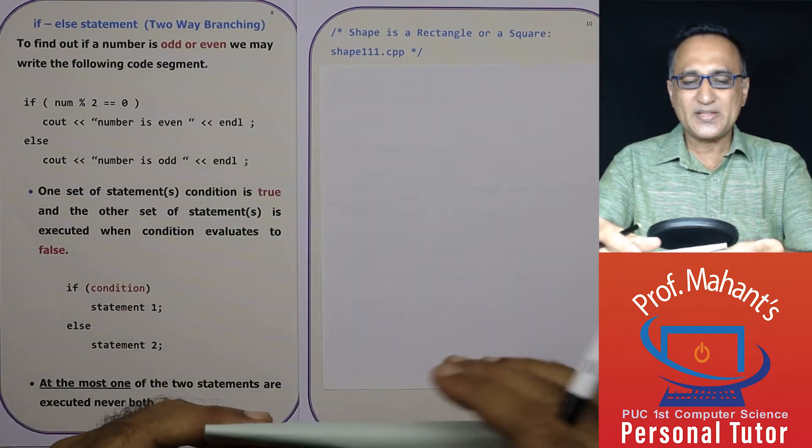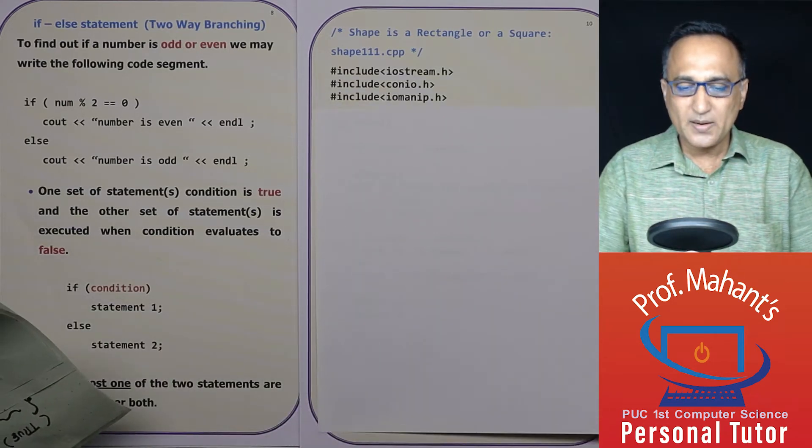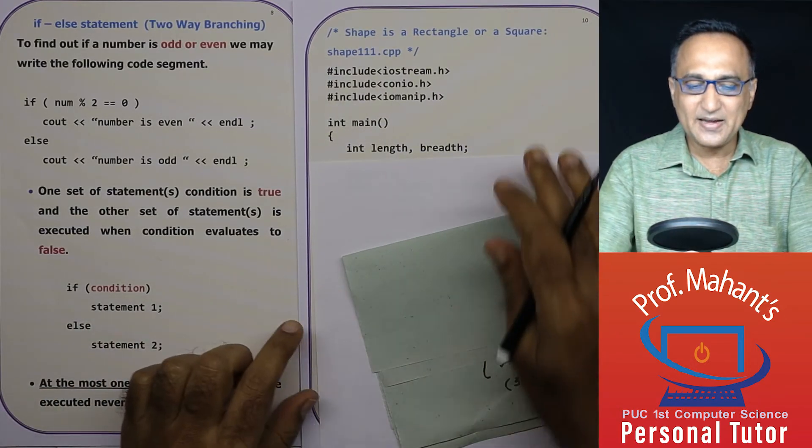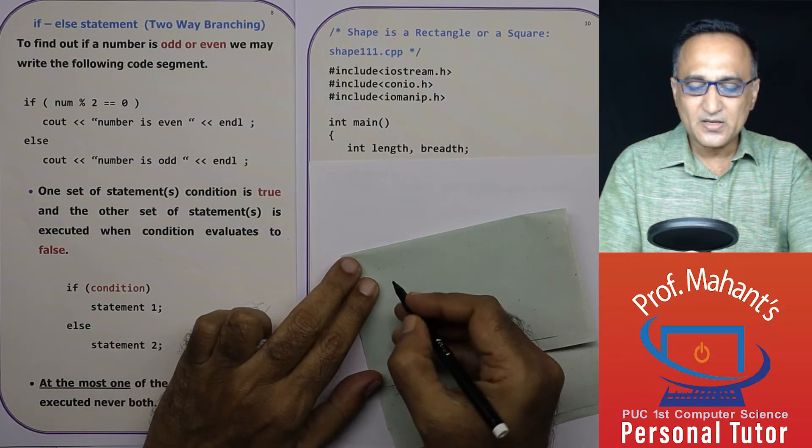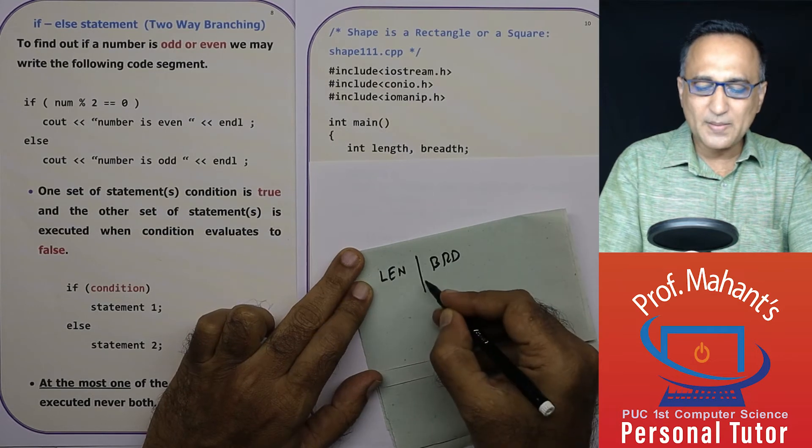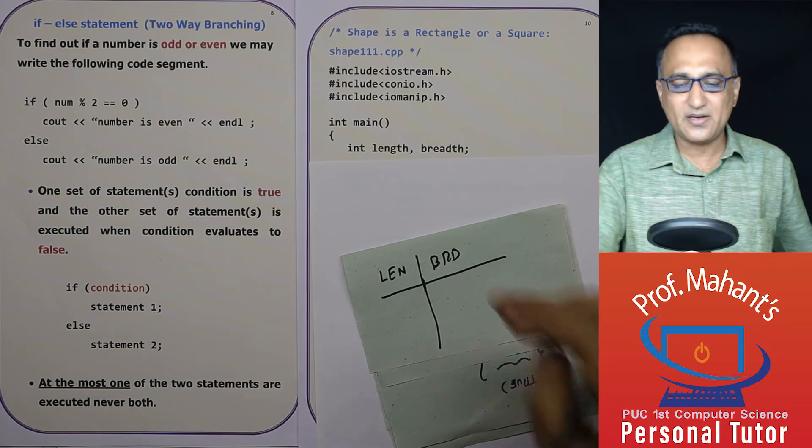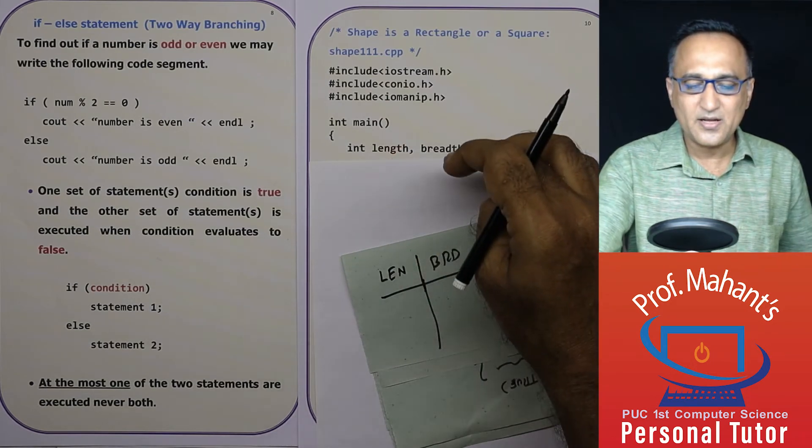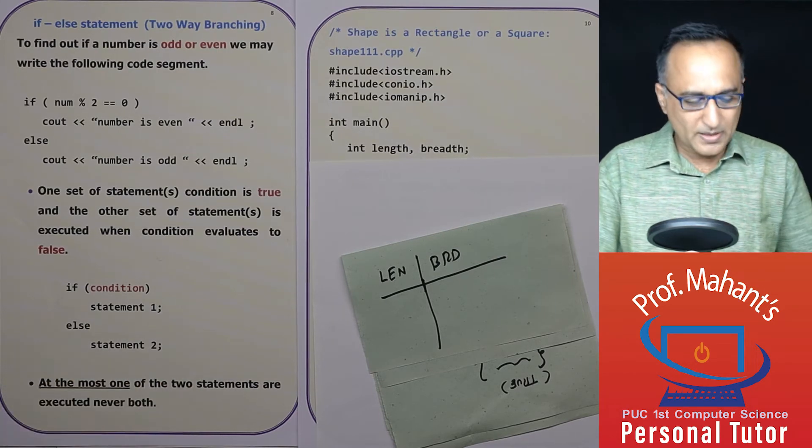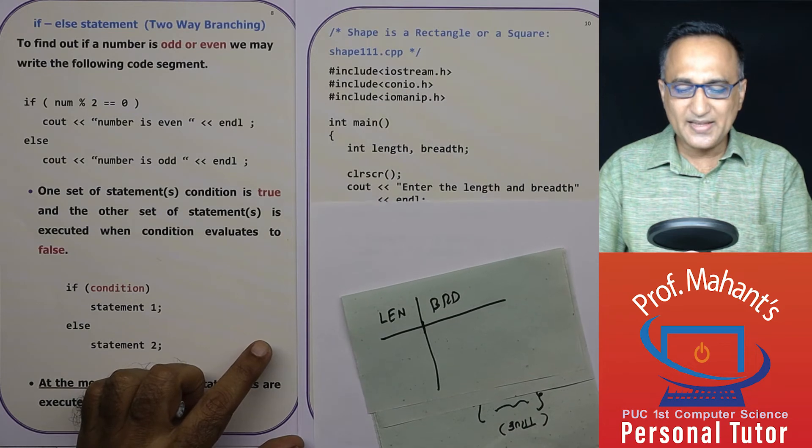Now let's take a look at one simple program to understand the working of the if and else. So what I'm going to do here is I have declared two variables called length and breadth respectively. I'm not using the same names everywhere, but the concept I'm trying to emphasize. What am I going to do? I'm going to ask the user to enter the length and breadth.